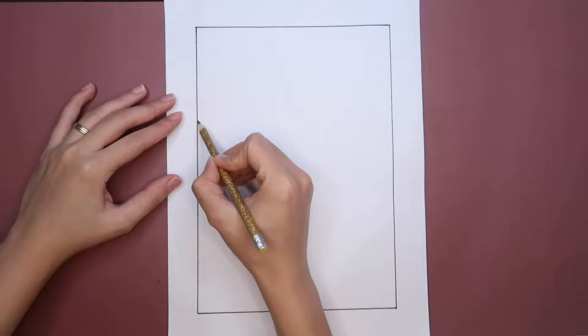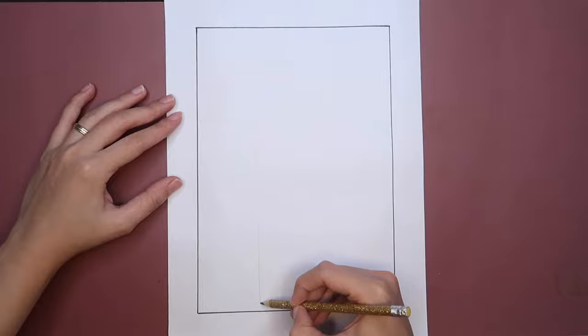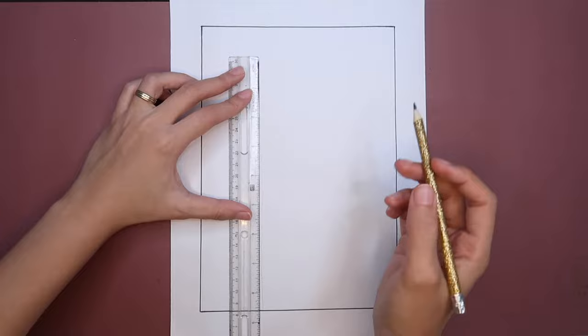Start by drawing the buildings and houses using pencil. Draw a rectangle and decide how tall you want the rectangle to be. You may also use a ruler if you want to create a straight line.